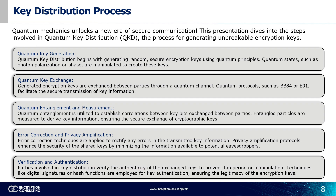Let's zero in on the most critical step of quantum key distribution: the key distribution process. Key distribution is the process of securely sharing encryption keys between parties involved in communications. In QKD, key distribution is crucial for establishing a secure channel immune to interception, ensuring that only authorized parties can access encrypted data and maintaining confidentiality and integrity. QKD begins with quantum states to generate encryption keys in such a way that any attempt to intercept or replicate them is detectable. These keys are then exchanged through a quantum channel using protocols such as BB84 or E91, ensuring only intended parties possess the encryption keys and preventing unauthorized access.